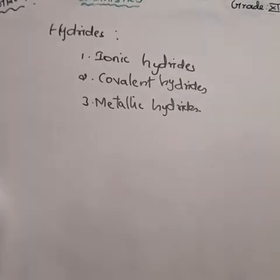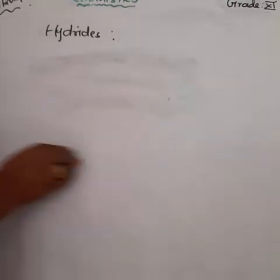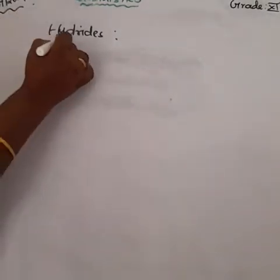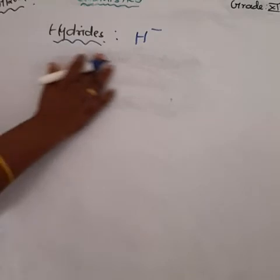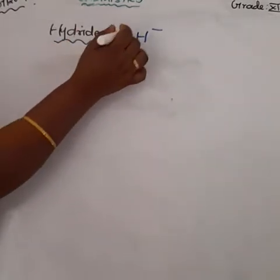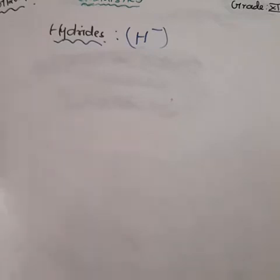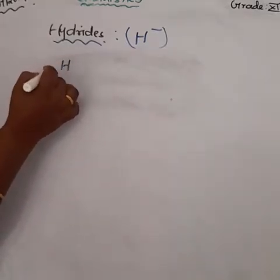We studied the introduction about hydrides in the last class. Let me repeat once again. The term hydride refers to an anion of hydrogen. Hydride means H minus — it is the negative ion, the anion of hydrogen.